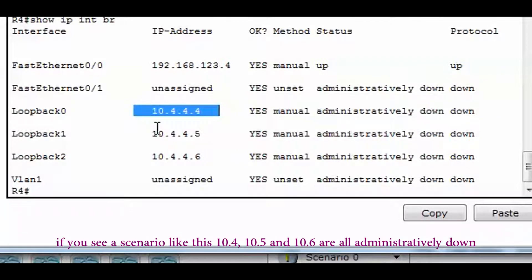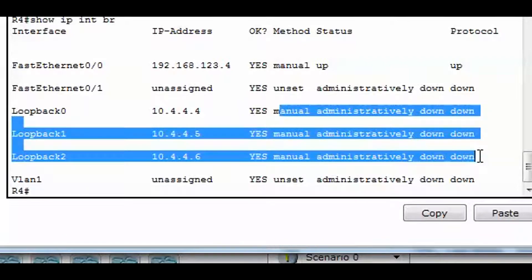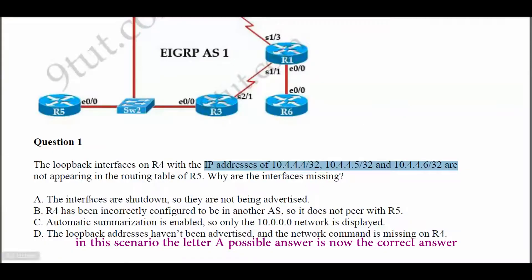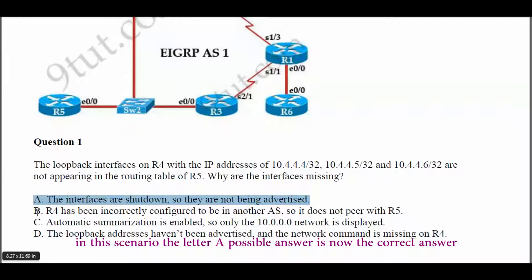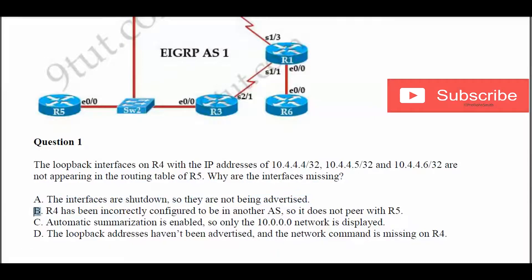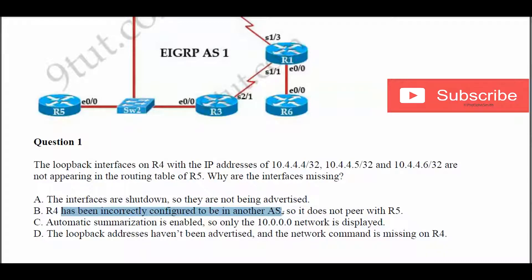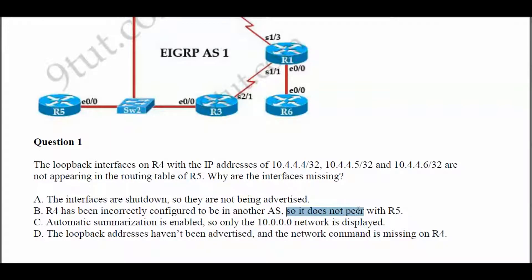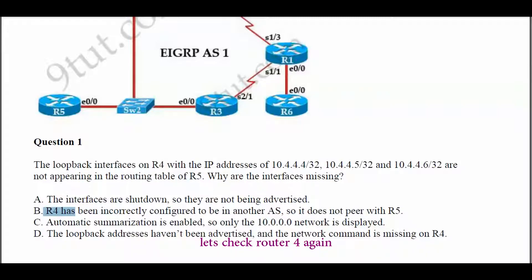However, if you see a scenario where 10.4.4.5 and 10.4.4.6 are administratively down, then letter A would be the correct answer. Now let's try possible answer B: Router 4 has been incorrectly configured to be in another AS, so it does not appear in Router 5's routing. Let's check Router 4 again.